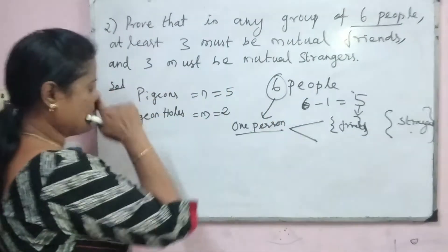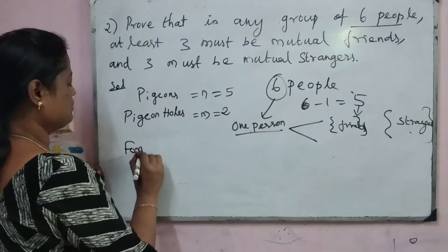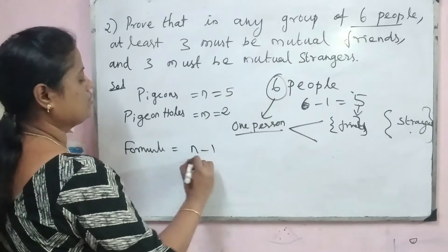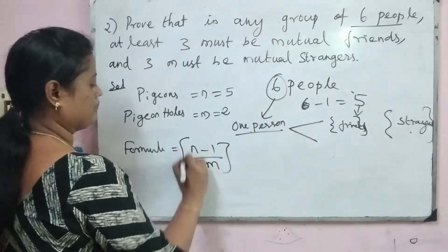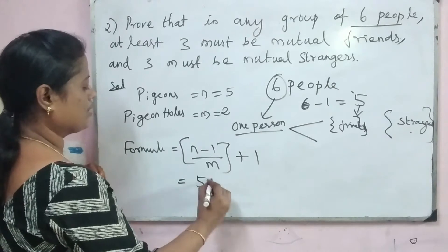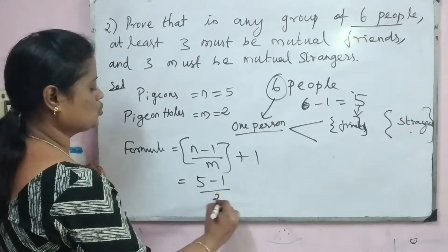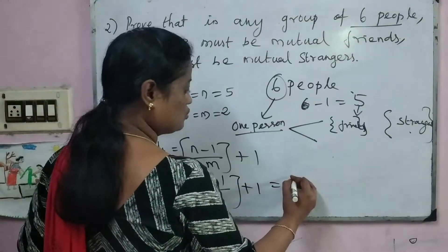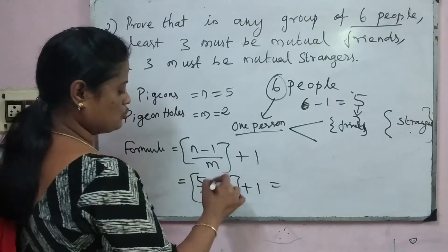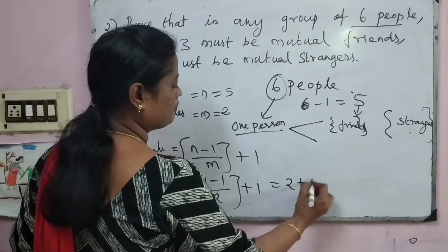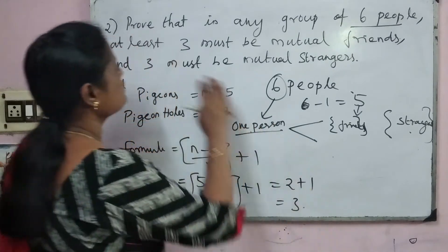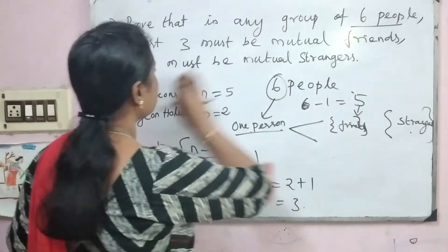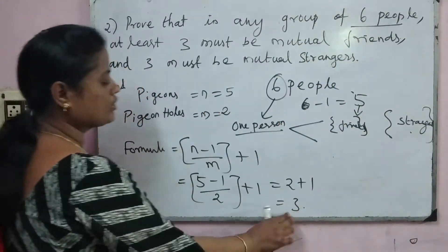The formula for the Pigeonhole Principle is N minus 1 divided by M, plus 1. Substituting: N is 5, M is 2. So (5 minus 1) divided by 2, plus 1 equals 4 divided by 2, plus 1 equals 2 plus 1, which equals 3. So at least 3 must be mutual friends and 3 must be mutual strangers. We got the answer: 3.